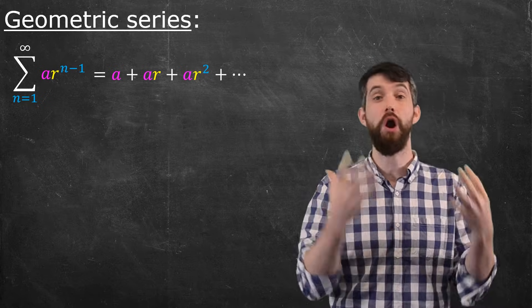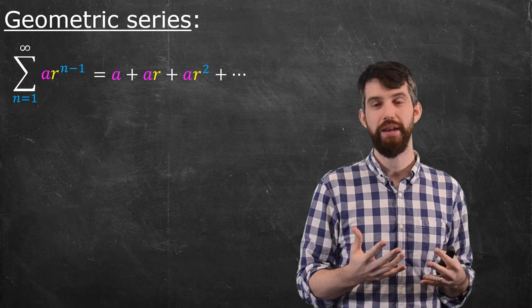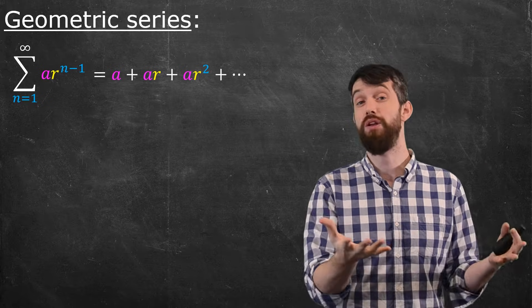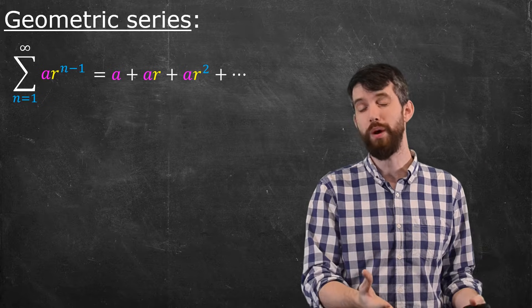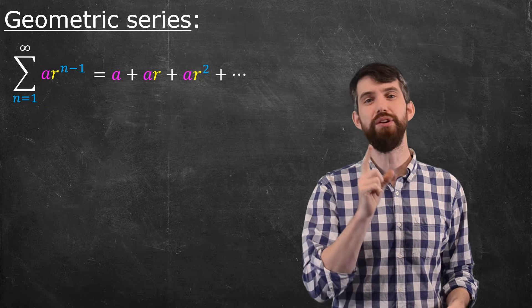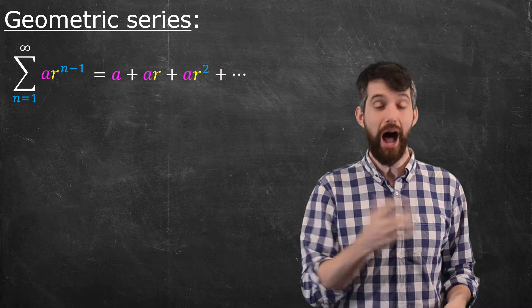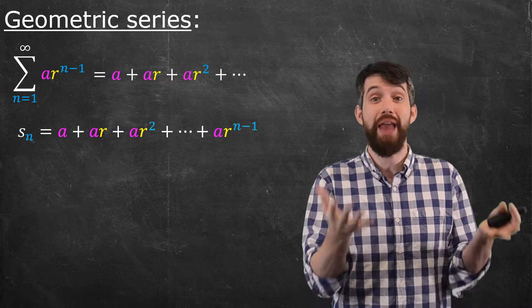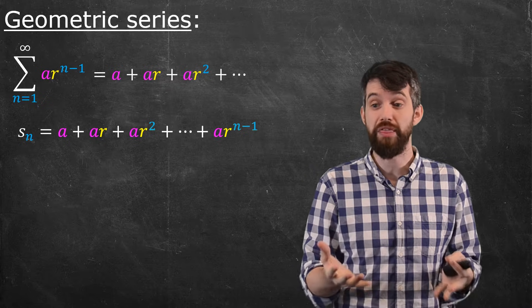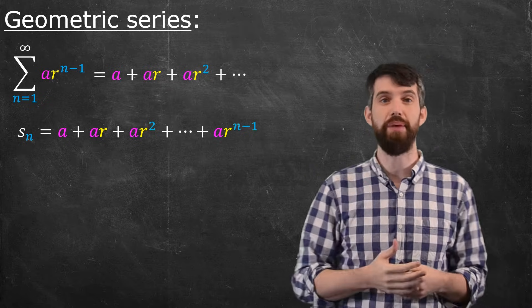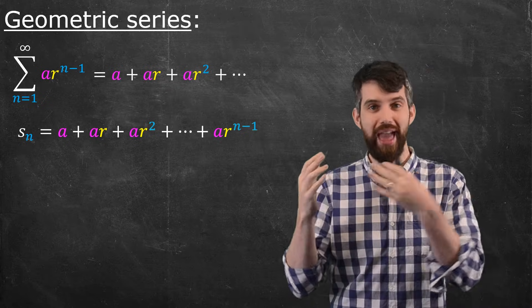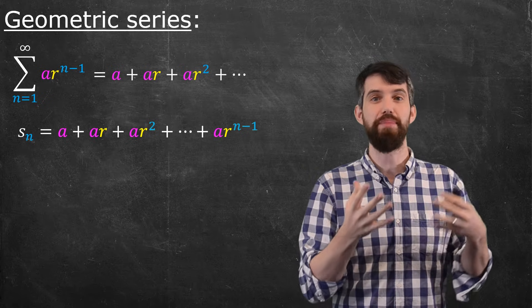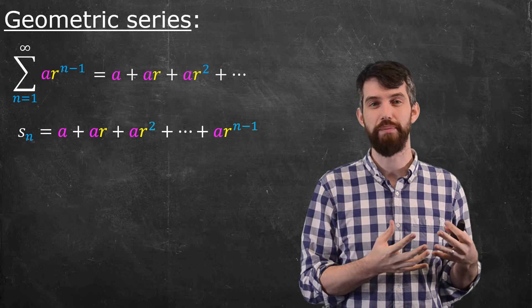We can do this generally for arbitrary r. Now, does this converge? Does this diverge? Does it depend on the parameters? Consider the partial sum. I'll write down s sub n, the partial sum. The nth partial sum is the sum of a plus ar, all the way up to ar to the n minus 1.